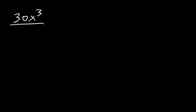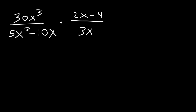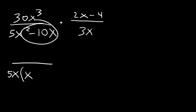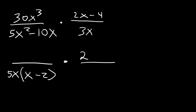Here's the next problem: 30x cubed divided by (5x squared minus 10x), multiplied by (2x minus 4) divided by 3x. For the denominator on the left, the GCF is 5x, giving us 5x(x minus 2). 5x squared divided by 5x leaves x, and negative 10x divided by 5x is negative 2. For 2x minus 4, the GCF is 2, giving us 2(x minus 2). We can't do anything with the 3x.